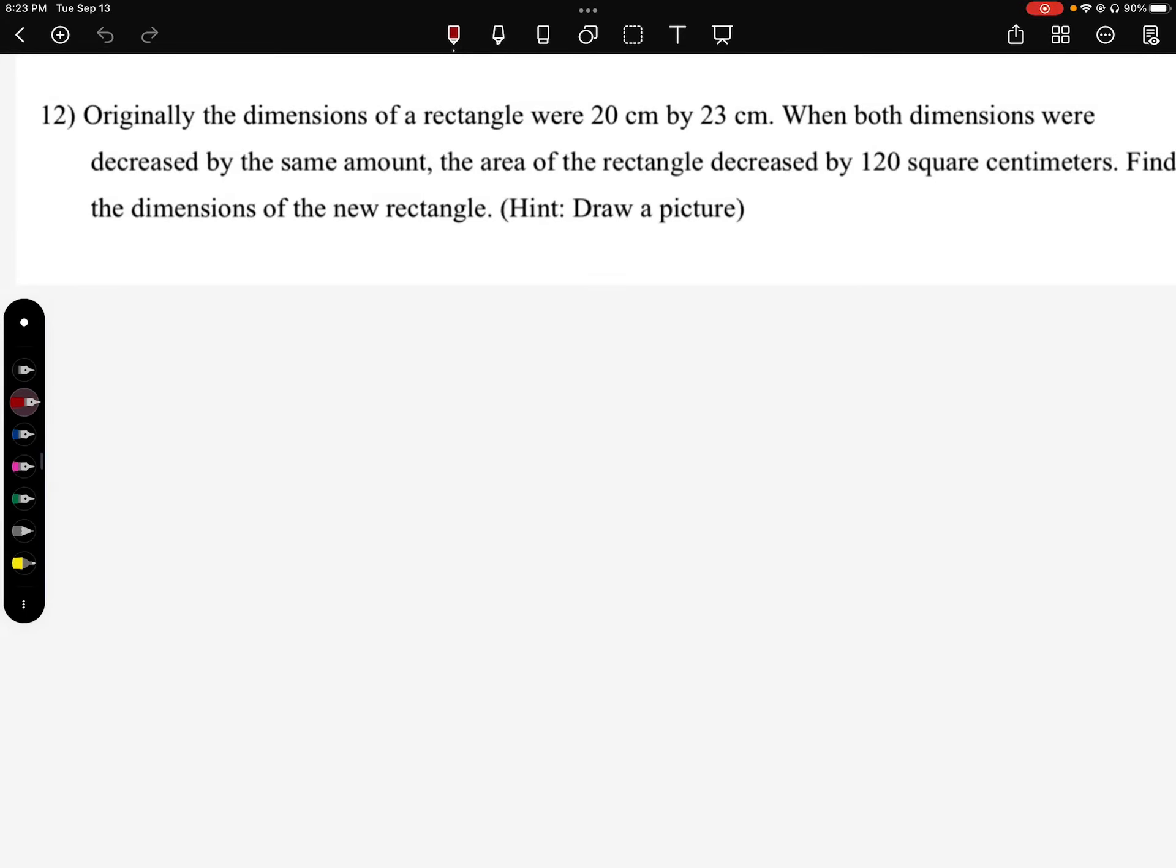Welcome to the video for Chapter 1, Part 2, Quiz Review. This is problem number 12. The problem reads: Originally, the dimensions of a rectangle were 20 cm by 23 cm. When both dimensions were decreased by the same amount, the area of the rectangle decreased by 120 square centimeters. Find the dimensions of the new rectangle.